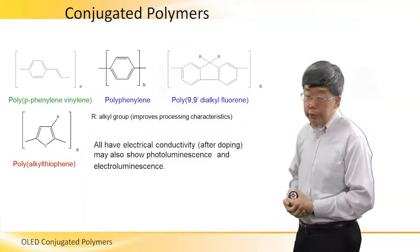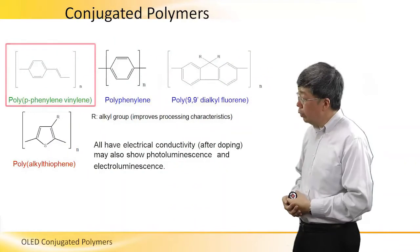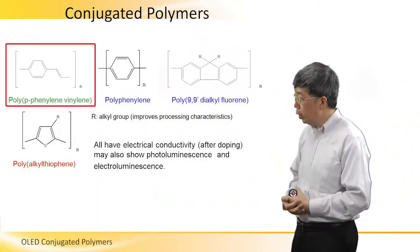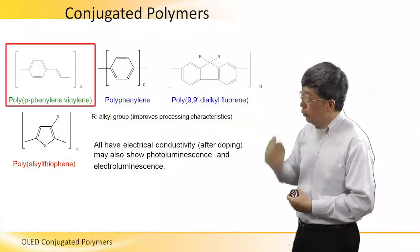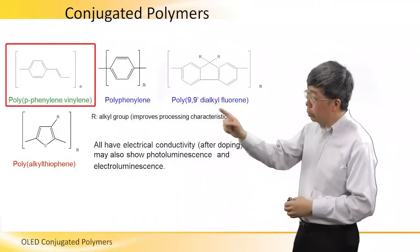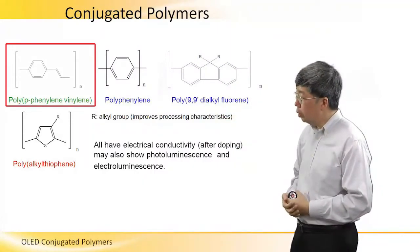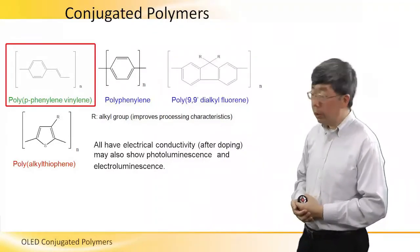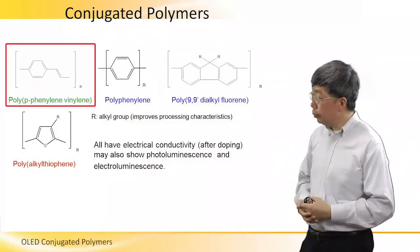We have four examples of these conjugated polymers. The first one is a green emitter, and it is called polyphenylene vinylene. Notice that the structural formula for this polymer has a square bracket. That is because we are showing just the monomer. The monomer consists of the phenylene ring and the vinylene linkage, and the little n on the right side is referring to the number of repeat units.